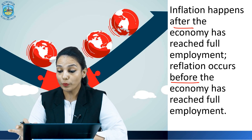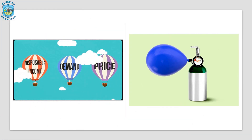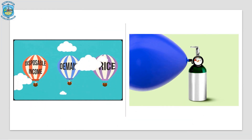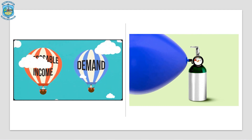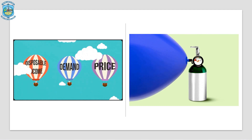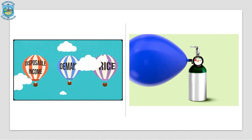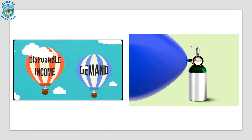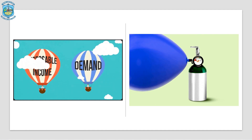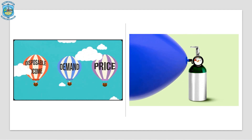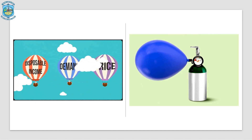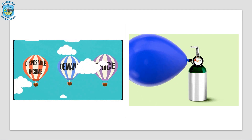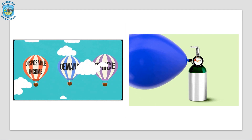Another way to think about reflation is to consider a balloon that has lost its air. The balloon has the potential to be quite large but needs some help to get back to its normal state. In the case of the economy, the government steps in and provides the necessary help.